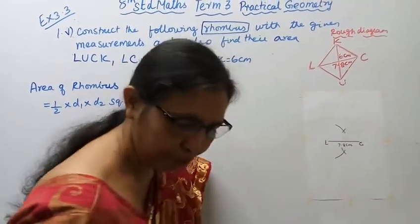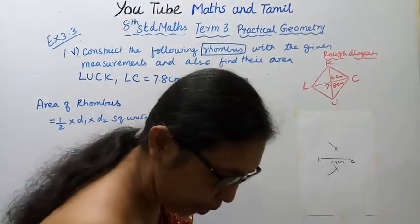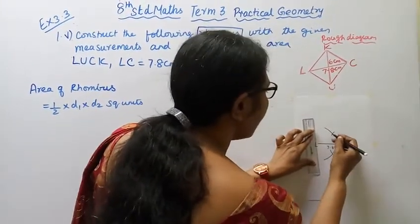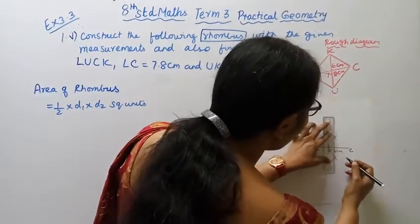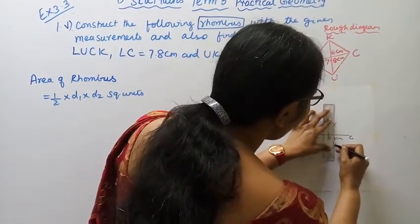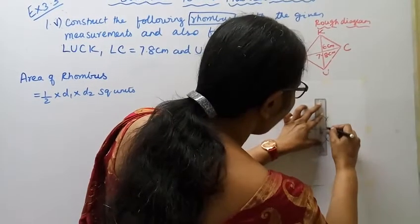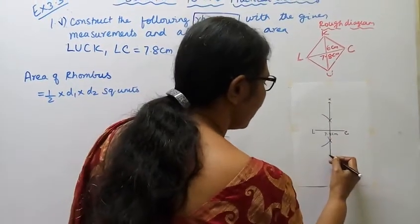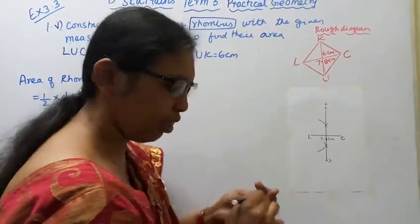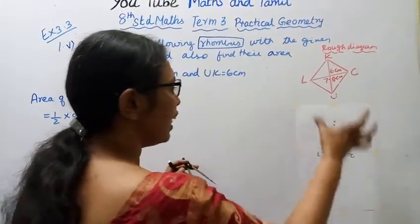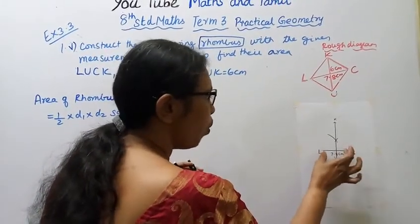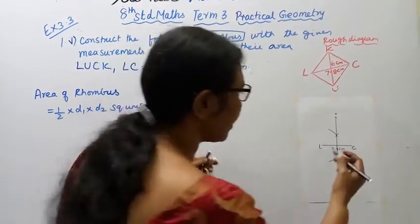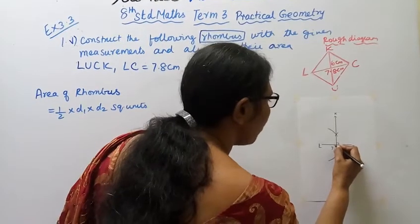This is the perpendicular bisector. In the second part, we will join at the point. We will divide by the point. LC is 7.8 cm. Take more than half and draw the perpendicular bisector. This gives us 90 degrees at the intersection point.